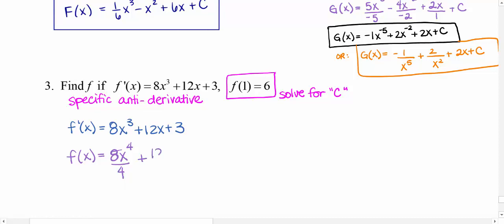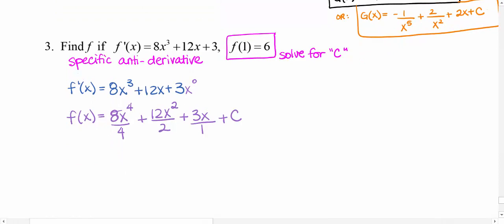My base stays the same. I will add 1 and divide by that number. Plus 12. Keep your base the same. Again, add 1 to your exponent, so it becomes a 2 over 2. Plus 3. And again, this is really x to the 0, so when I add 1 to that exponent, it does become x to the 1st over 1, and I'm going to keep that plus C. Don't forget your constant of integration.